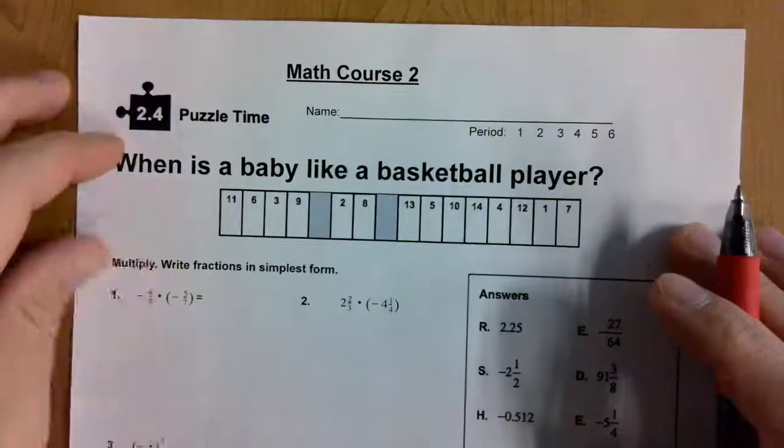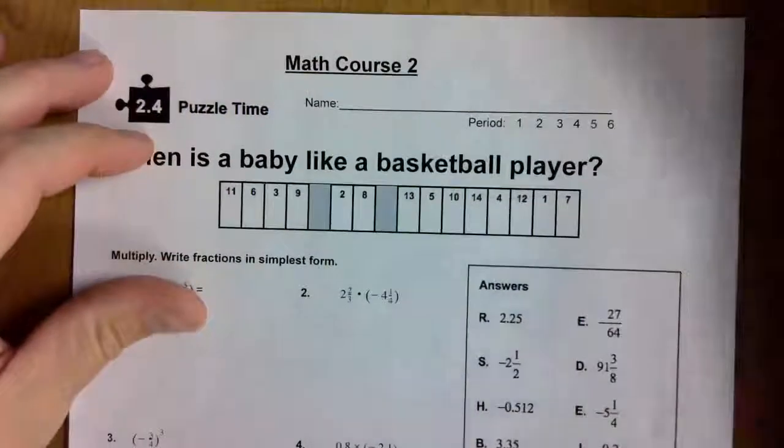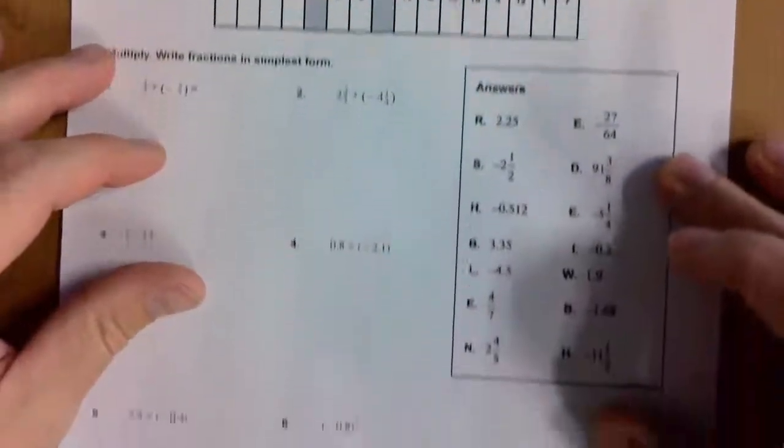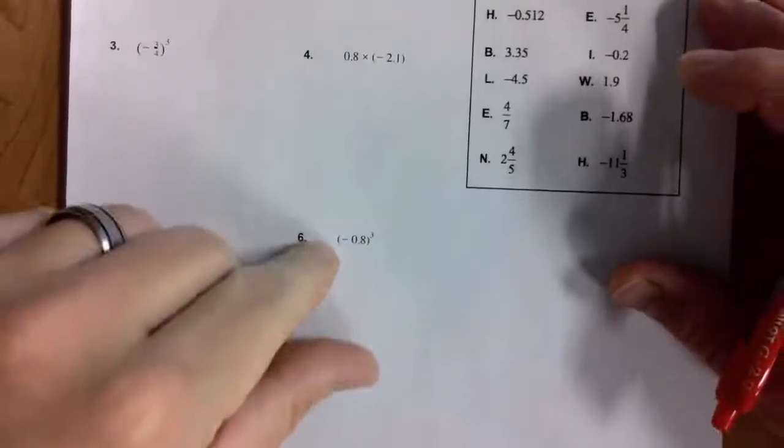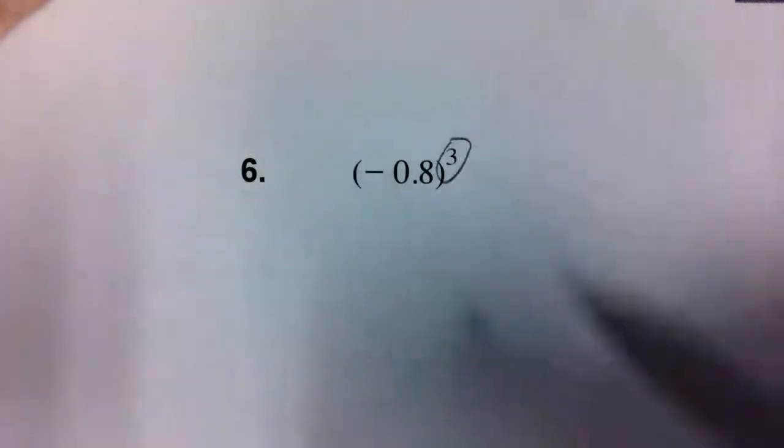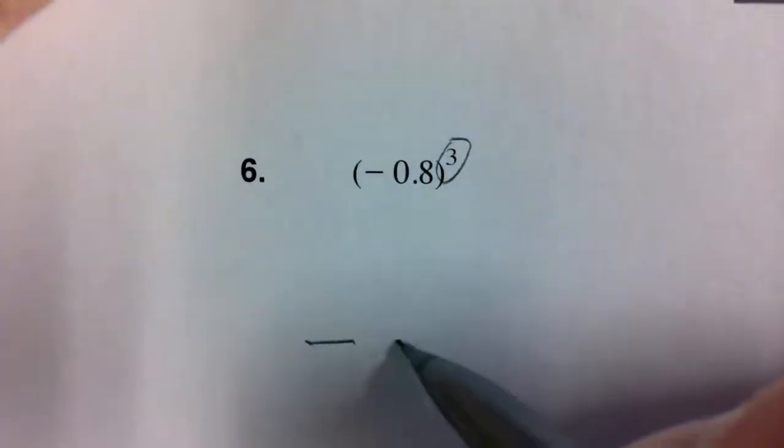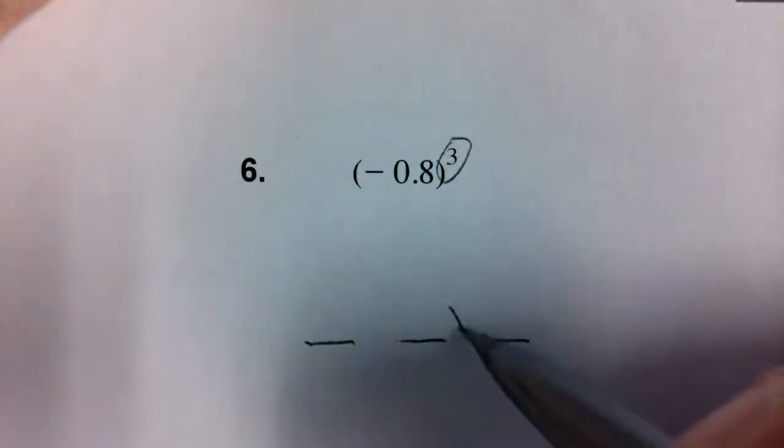The 2.4 puzzle time worksheet went over four examples in class. Let me go over those with you. Please jump down to number six. If you're printing it off you can write on it. If you don't have a printer, just write out the work on a piece of paper. You can view this problem in the video as well as on the weekly agenda. There's a little three here which will come into focus in a second - it's an exponent.